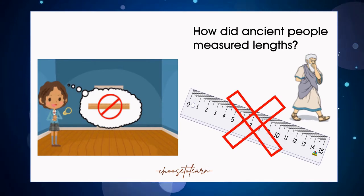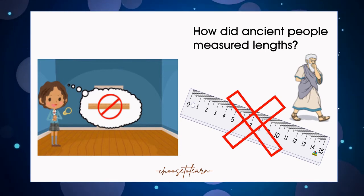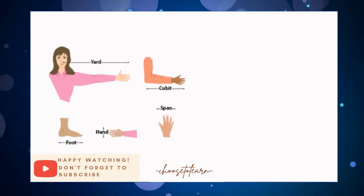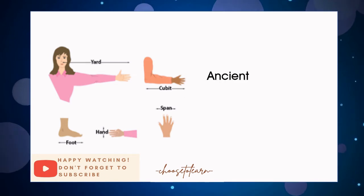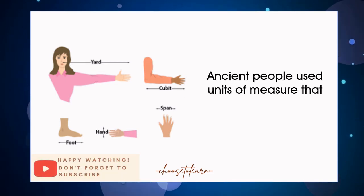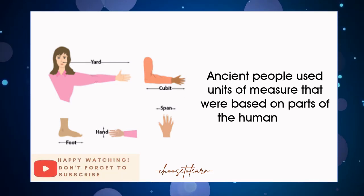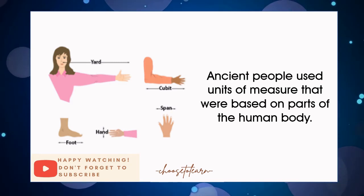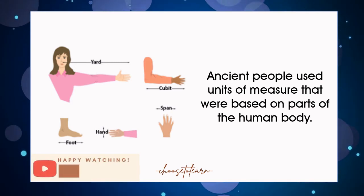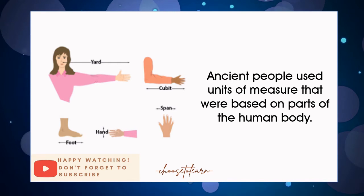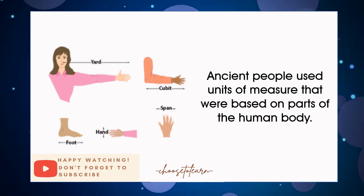No, the ancient people didn't have meter scales and measuring tapes. Instead, they measured lengths in other units like foot, yard, handspans, cubit, etc., all depending upon the lengths of our body parts as shown in the picture.